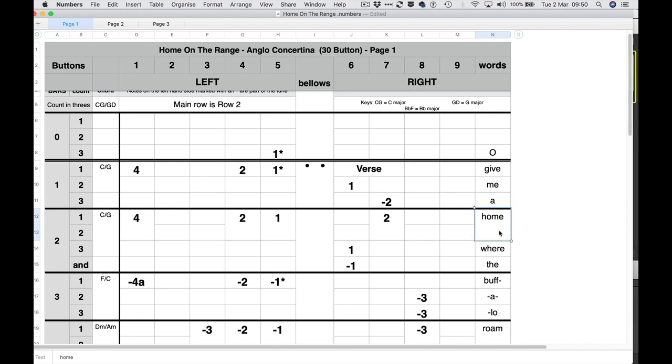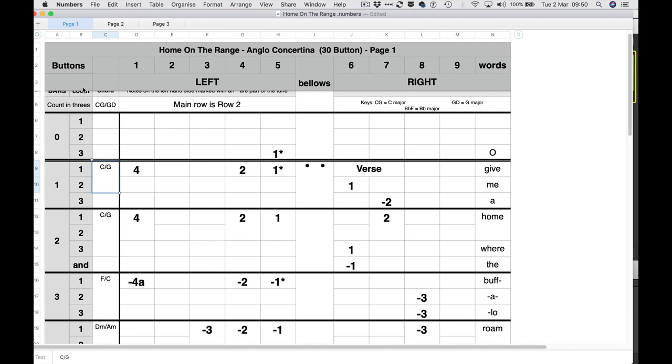A brand new feature as of today is I put some chords in on the left hand side here. Now these lessons cater for both CG and GD, and indeed any kind of tuning you can think of, but basically CG and GD because they're the most common. So what I've done here, I put a new column in called chord, and you can see it's CG on the left and GD on the right.